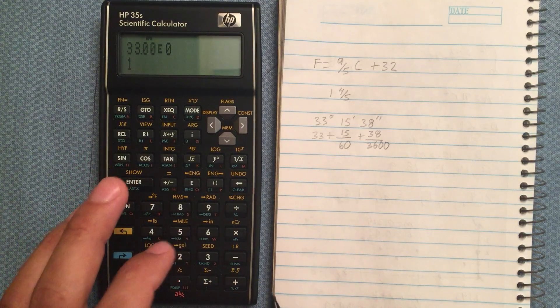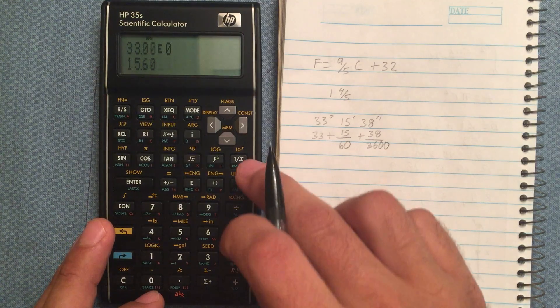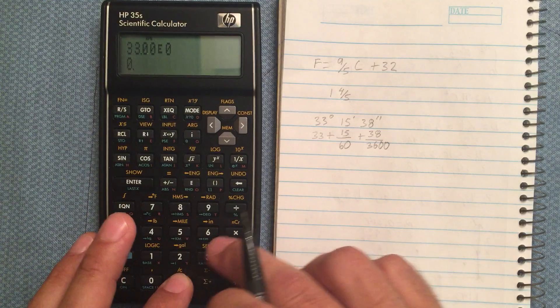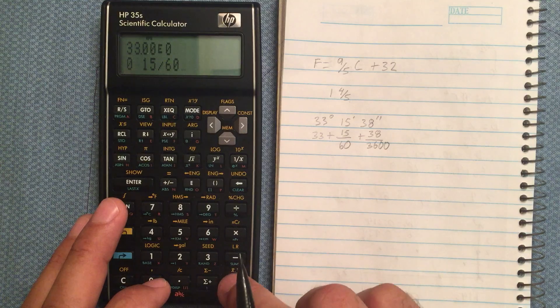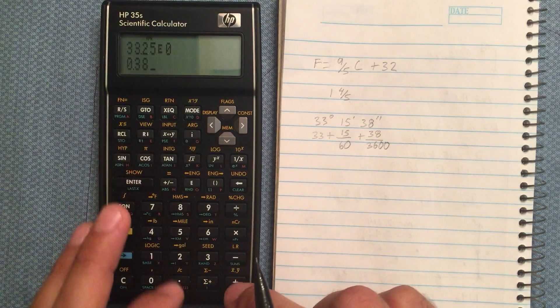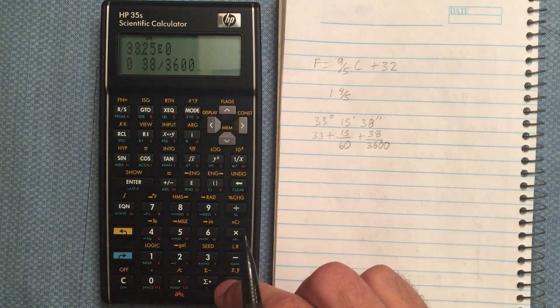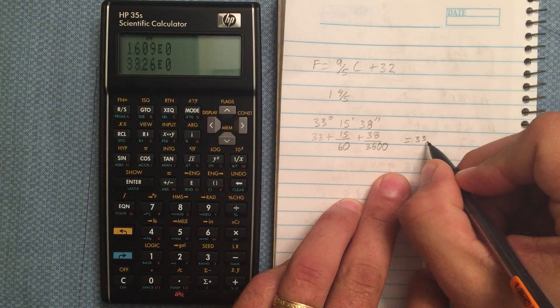So, 33, 15, 60. Oops. Let's do 15 divided by 60, and add those. 38 divided by 3600. That gives me 33.26.